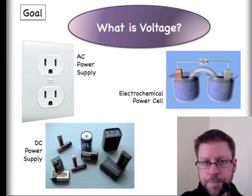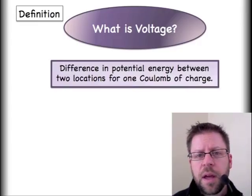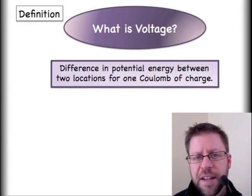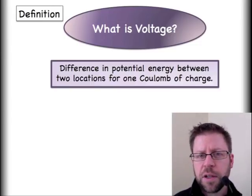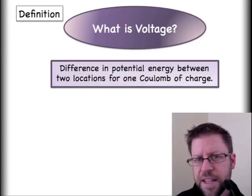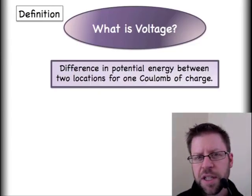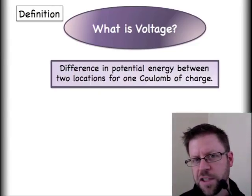Let's start with the definition: a voltage is a difference in potential energy that a charge can experience between two different locations. Specifically, it's a difference in the number of joules of energy per coulomb of charge, so one volt is equal to one joule per coulomb.